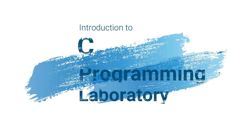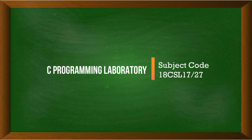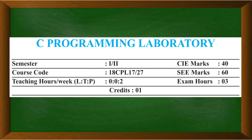Apart from the theoretical concepts in the theory subject, you also have a C programming laboratory designed so you can practice the concepts studied in theory. The course code for C programming laboratory is 18CPL17 for the first semester and 18CPL27 for the second semester. The CIE marks is 40, the SEE marks is 60, the exam duration is three hours, and the credit is one — it is a two-hour practical session.